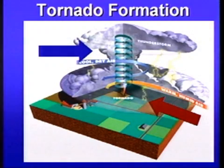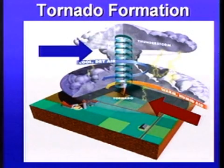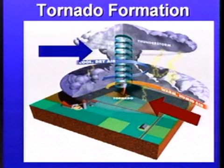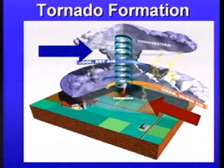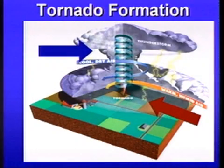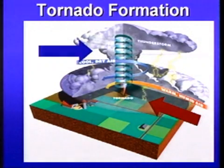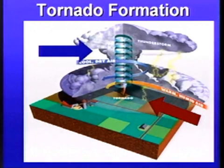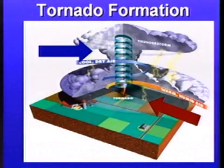Not all of them produce tornadoes, and that's the part of the science that's very complicated and very frustrating for us meteorologists — why do some storms produce tornadoes and why some don't. Unfortunately that's part of the science that is going to keep evolving, and hopefully in the next several years we'll be able to forecast them a little bit better. But right now it's fairly tough to do.